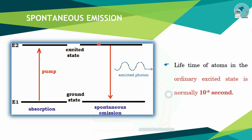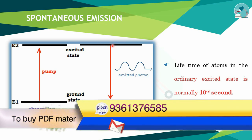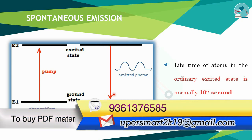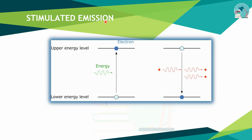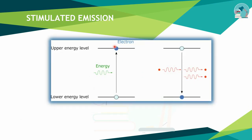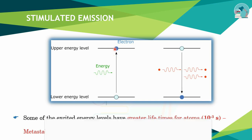Spontaneous emission: the first atom has a lifetime of 10 to the power minus 8 seconds. The second atom has a lifetime of 10 to the power minus 3 seconds — this is the metastable state. So 10 to the power minus 8 is the ordinary excited state, and 10 to the power minus 3 is the metastable state.